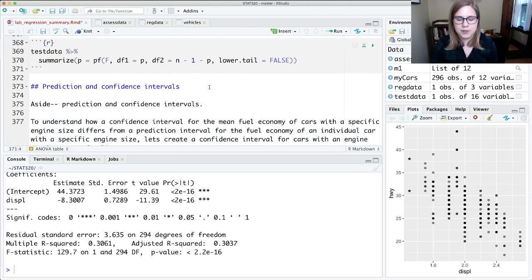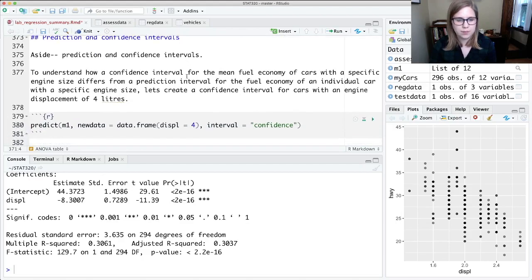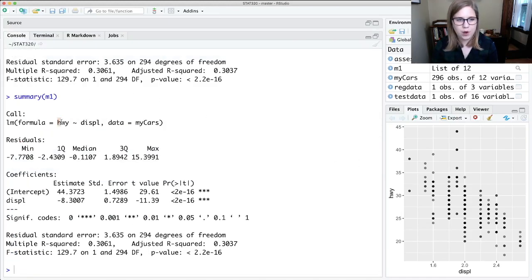Here's the last piece of the lab. We're going to talk about prediction and confidence intervals. I've made a model summary m1. This is a model to try to predict the highway mileage of a car based on its displacement.